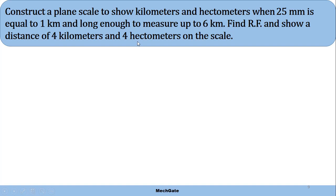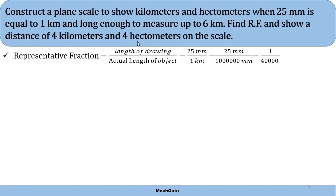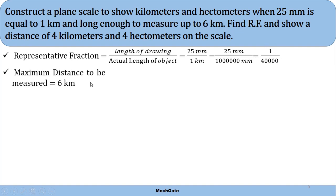Let's list out the given data. RF equals length of drawing divided by actual length of object. Length of drawing is 25 millimeters, actual length is 1 kilometer. Converting 1 kilometer into millimeters, we get RF equivalent to 1 upon 40,000. This is our RF. Maximum distance to be measured is 6 kilometers.